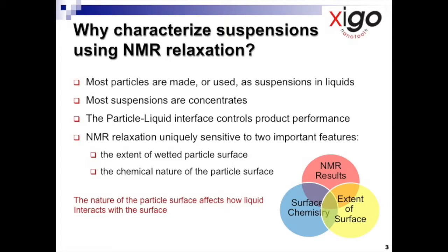This is encapsulated in a small schematic at the bottom right-hand side. NMR is unique in this because typically traditional characterization instruments are only sensitive to one of the features — for example, particle size or zeta potential — but not both simultaneously.